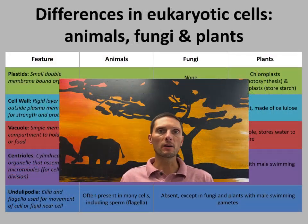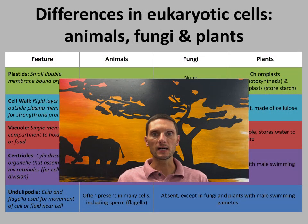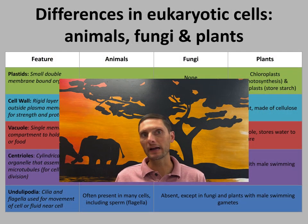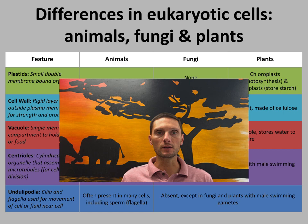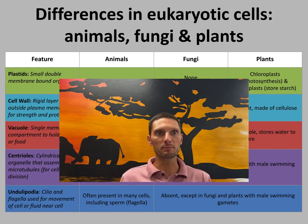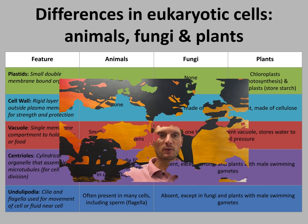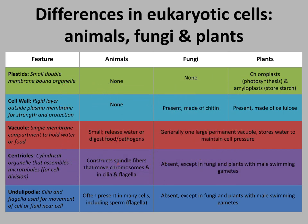Now let's compare different types of eukaryotic cells: animals, fungi, and plants. One key difference is that plants have chloroplasts while animals and fungi do not. Having chloroplasts gives plants the ability to photosynthesize and produce their own sugars for energy.